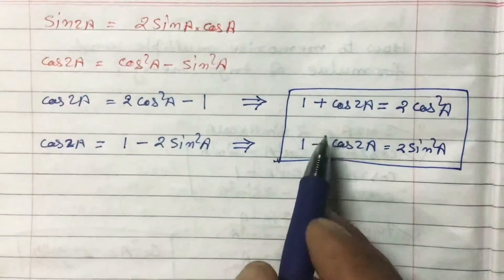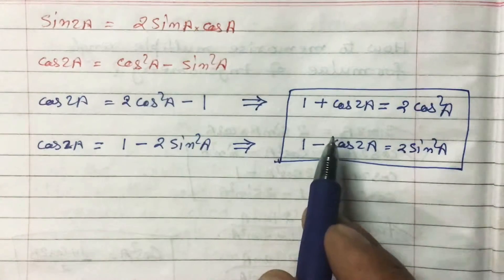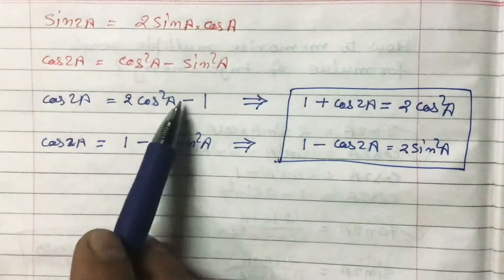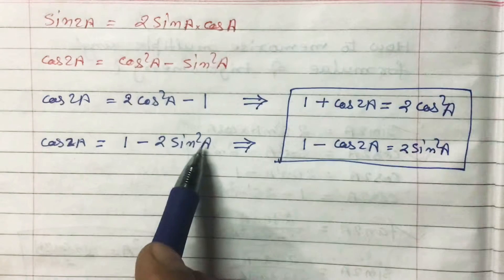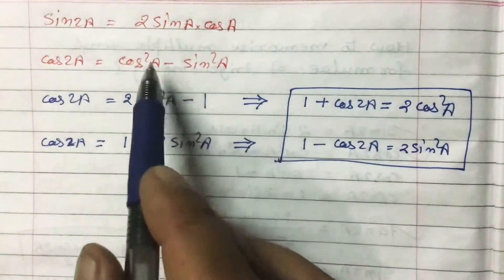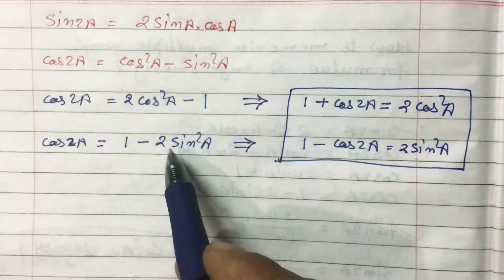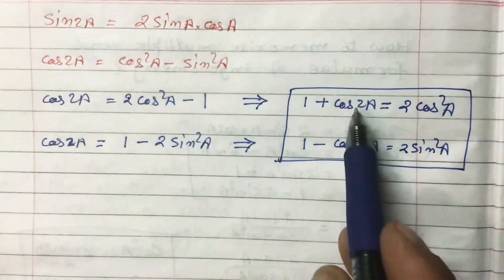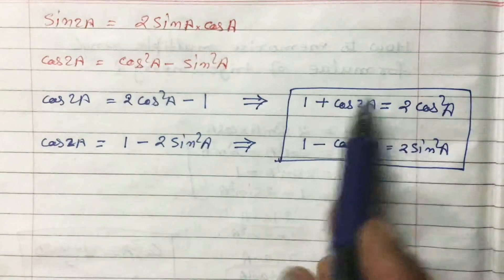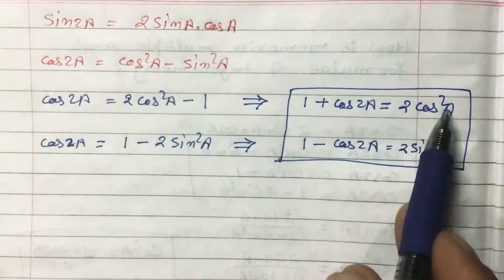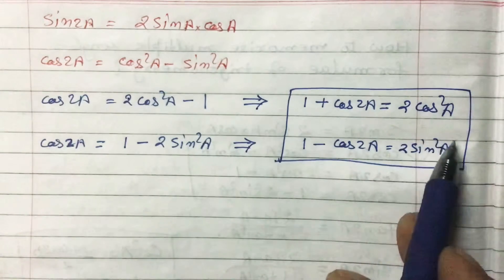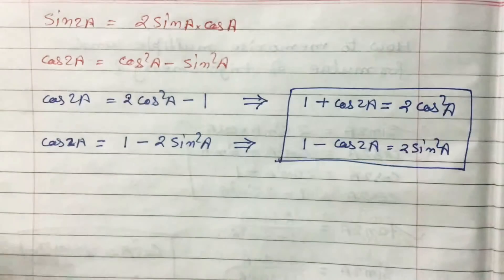There are three formulas for cos 2A: cos²A - sin²A, 2cos²A - 1, and 1 - 2sin²A. If in a question you see 1 + cos 2A, always apply 2cos²A directly. If you see 1 - cos 2A, directly write 2sin²A. No need to expand the cos 2A formula first.